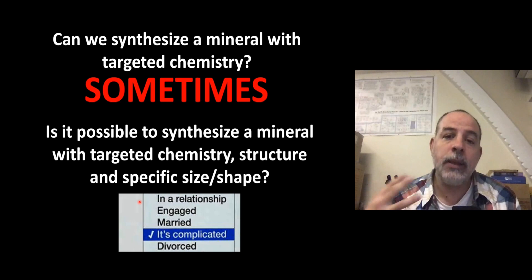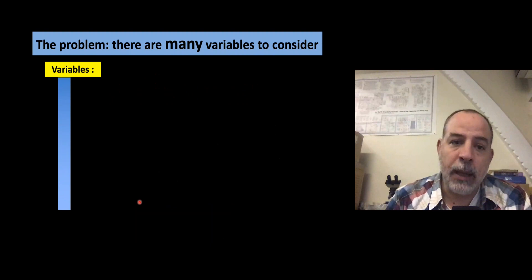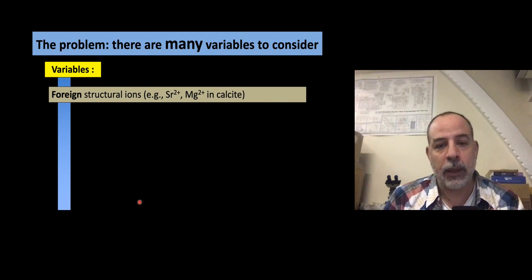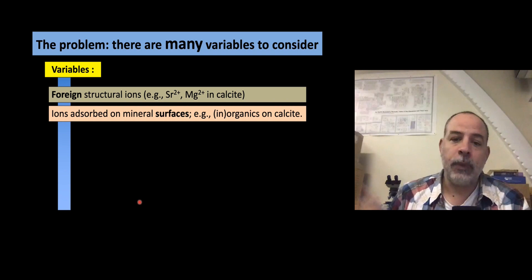There are many variables affecting crystallization and also many variables that affect the properties of crystals and minerals. For example, if we have foreign ions in the structure of crystals, that will affect the properties. In calcite, it's very common to find magnesium or strontium, and these ions can affect the solubility product and the dissolution rate of calcite.